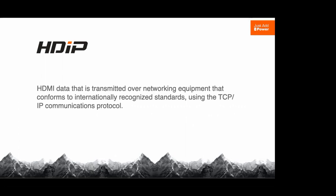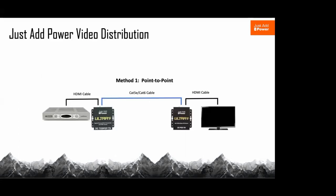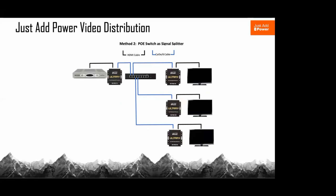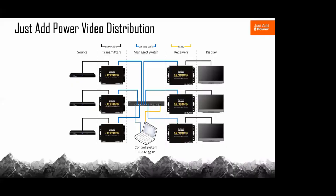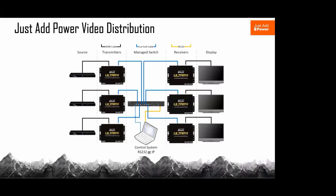Some of the ways to hook up a Just Add Power system: point to point — we do work like that, we don't do it very often, but if you just need a single network cable, or even through a single switch, or point-to-point wireless bridges. We also work as a distribution amplifier — a single gigabit PoE switch with one transmitter and as many receivers as you want. Most of the time we're building the limitless HDMI distribution: one transmitter per source, one receiver per display, with a network switch or switches in between, sometimes across campuses, universities, and arenas.